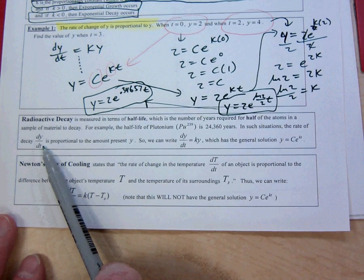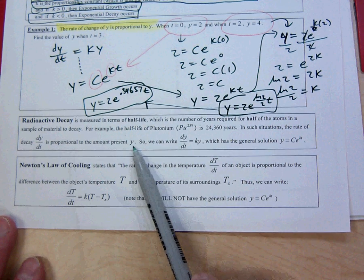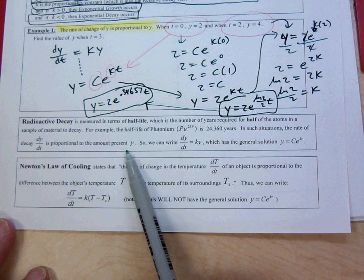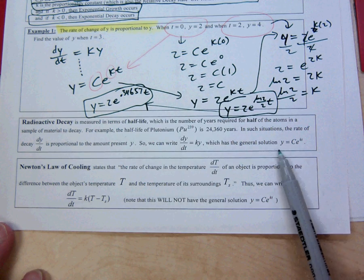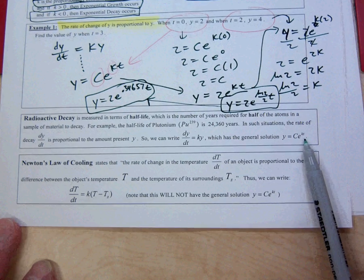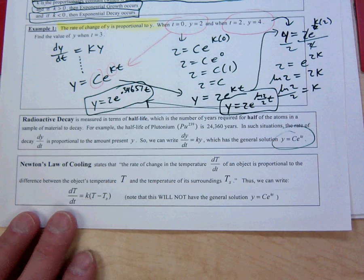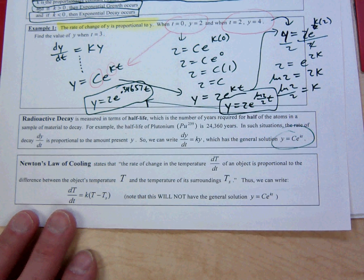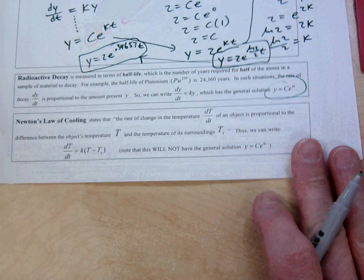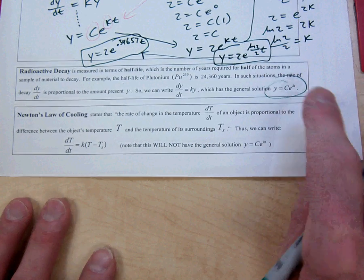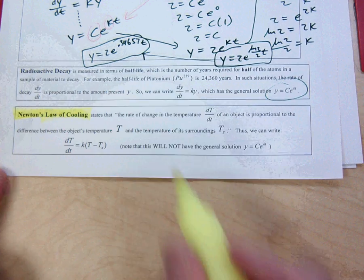In radioactive decay, the rate of decay dy/dt is proportional to the amount present y. This fits our scenario exactly, so we write dy/dt = ky with general solution y = Ce^(kt). Anytime a problem involves a half-life situation or radioactive material, you can use that model.